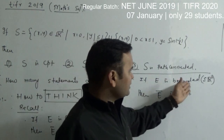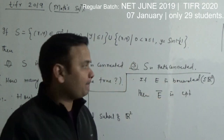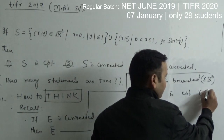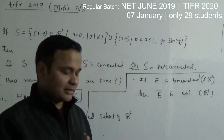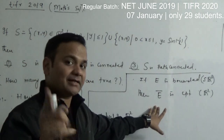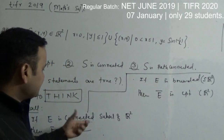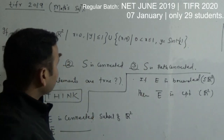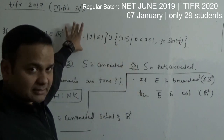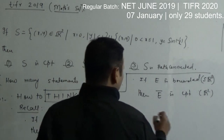Simple. If E is a bounded subset of R², then its closure is always compact. This reasoning goes for R² with the usual metric — mind that. Now I am going to answer this question. I am going to erase this and make a geometrical picture of S.